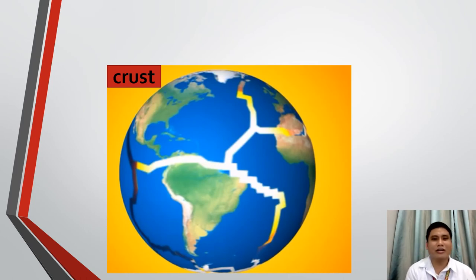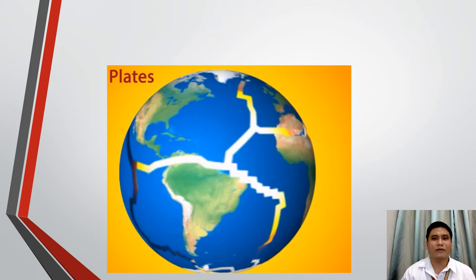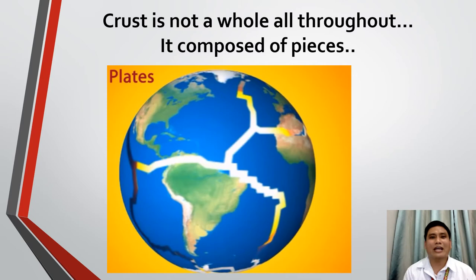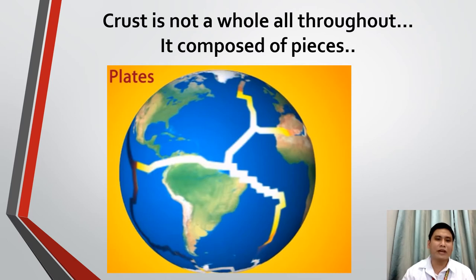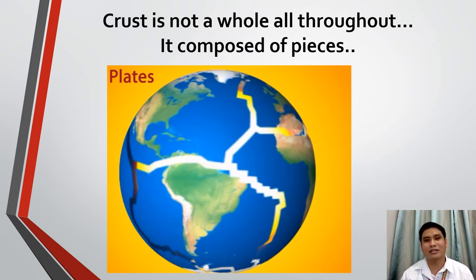So, if this is the Earth's crust, it is made up of plates. For everyone's information, the crust is not whole all throughout — it is composed of pieces, several huge masses of land. These huge masses of land have boundaries between them, and along those boundaries, earthquakes, volcanic eruptions or volcanic activities, and the building or creation of mountain ranges occur.